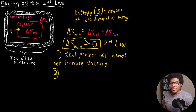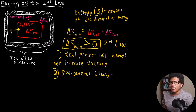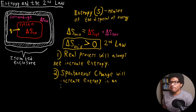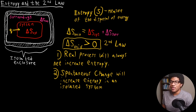The other way to state the second law of thermodynamics involves this idea of spontaneous change, which is essentially saying the same thing as a real process. For a spontaneous change, there will always be an increase in entropy. So these are really two ways of saying the same thing: any real process will have a net increase in entropy, and the other statement gets to what we talked about regarding spontaneous change.